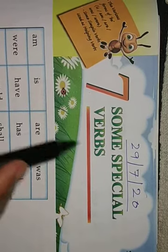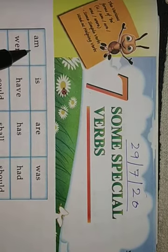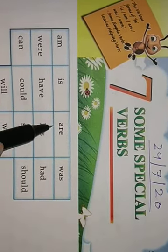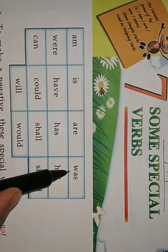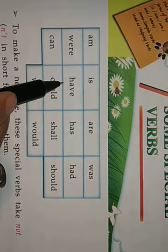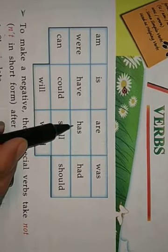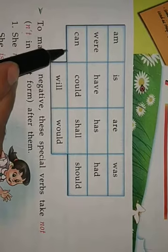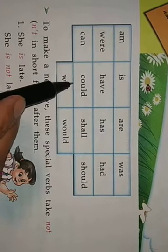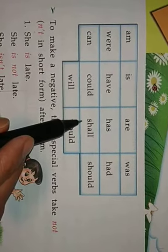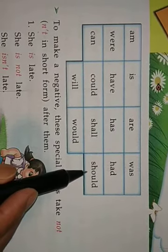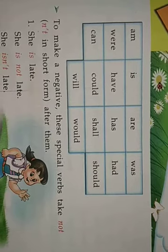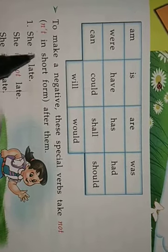Some special verbs are: am, is, are, was, were, have, has, had, can, could, shall, should, will, would.